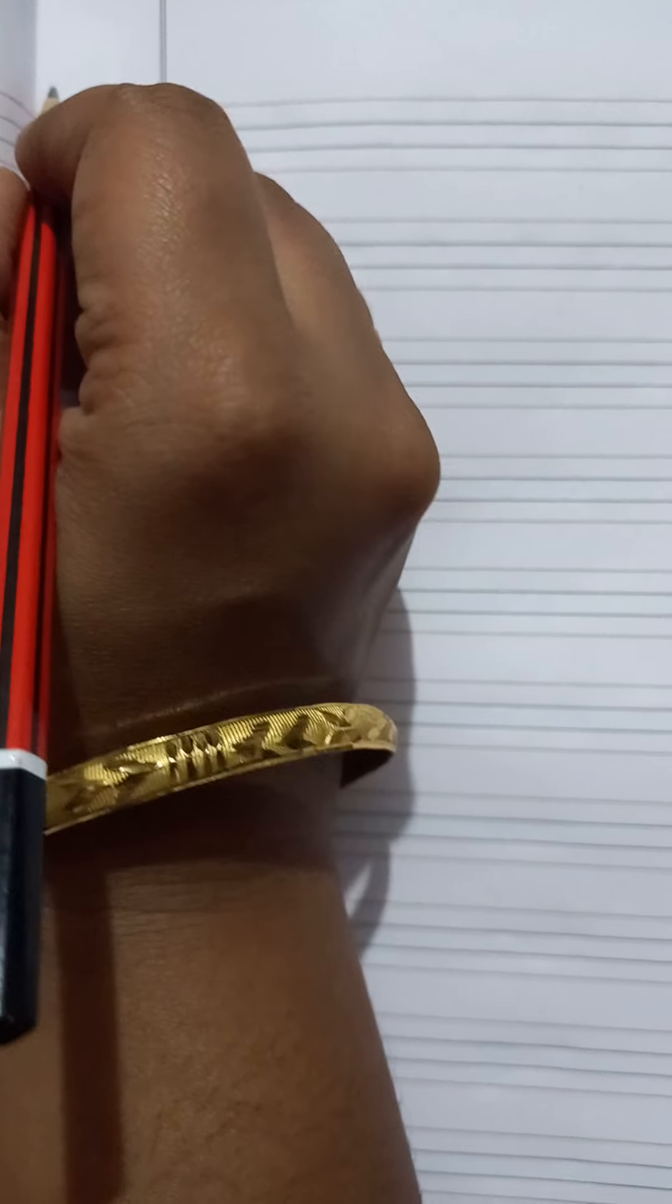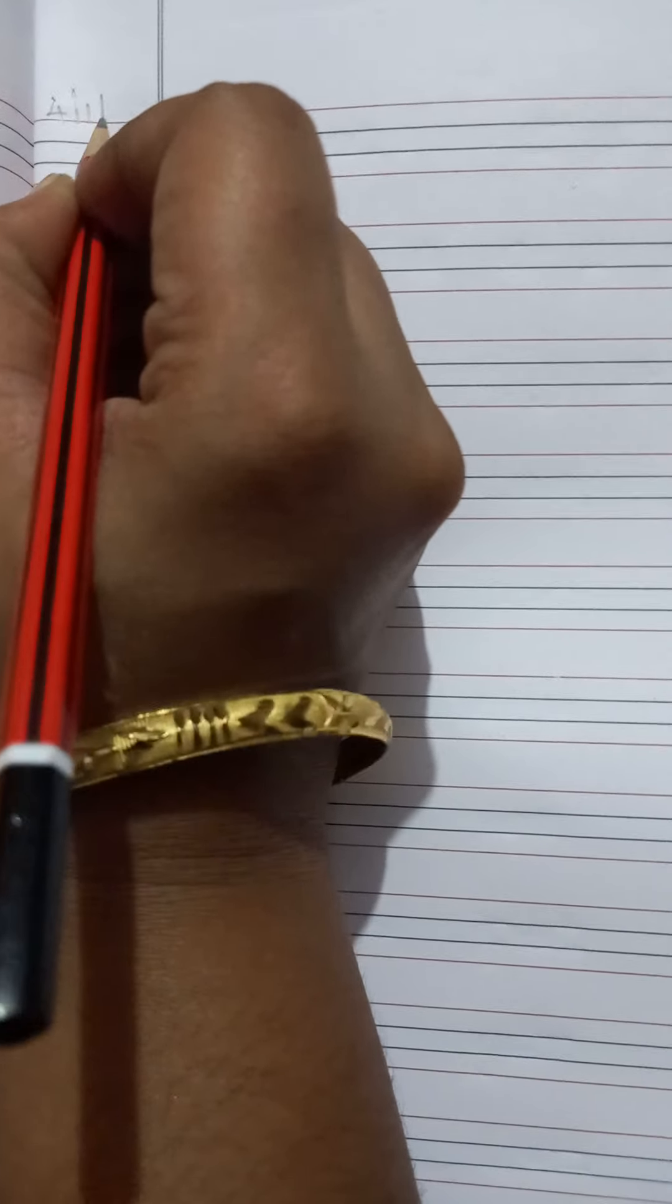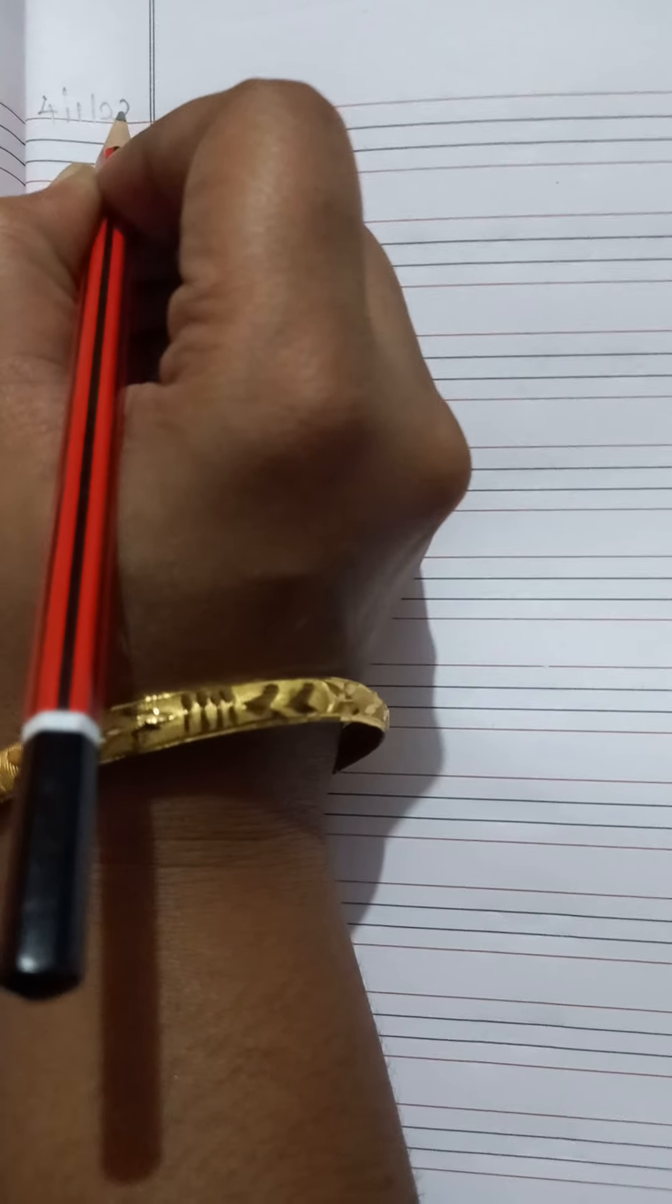Take your English note. This is your four line note. Write today's date. What is the date today? 4-1-22. 4-1-22 is the today's date.